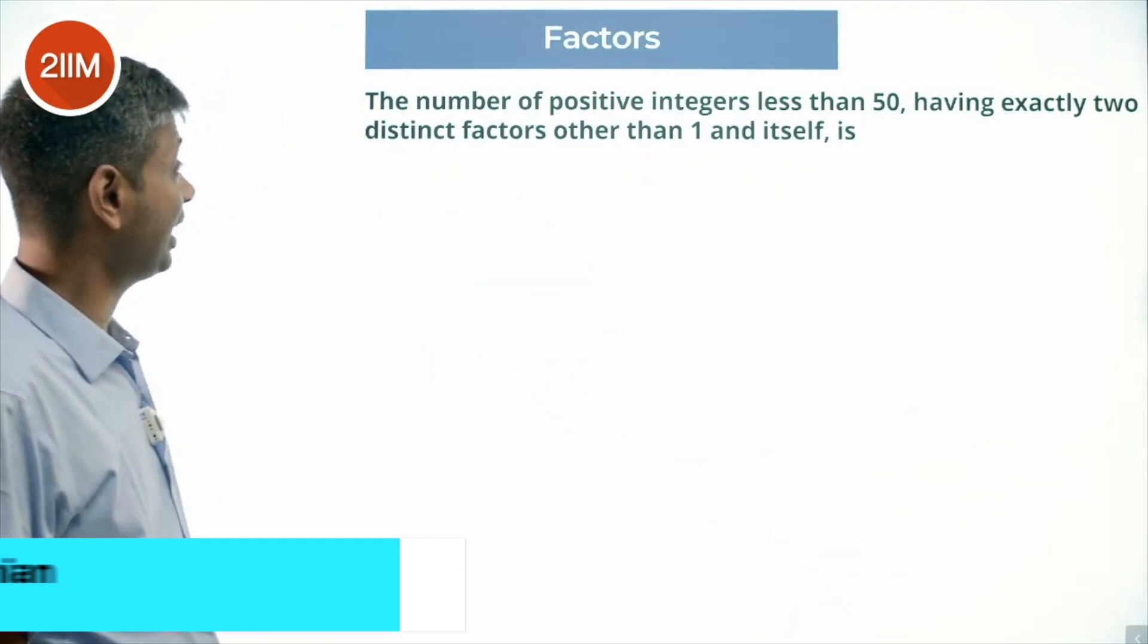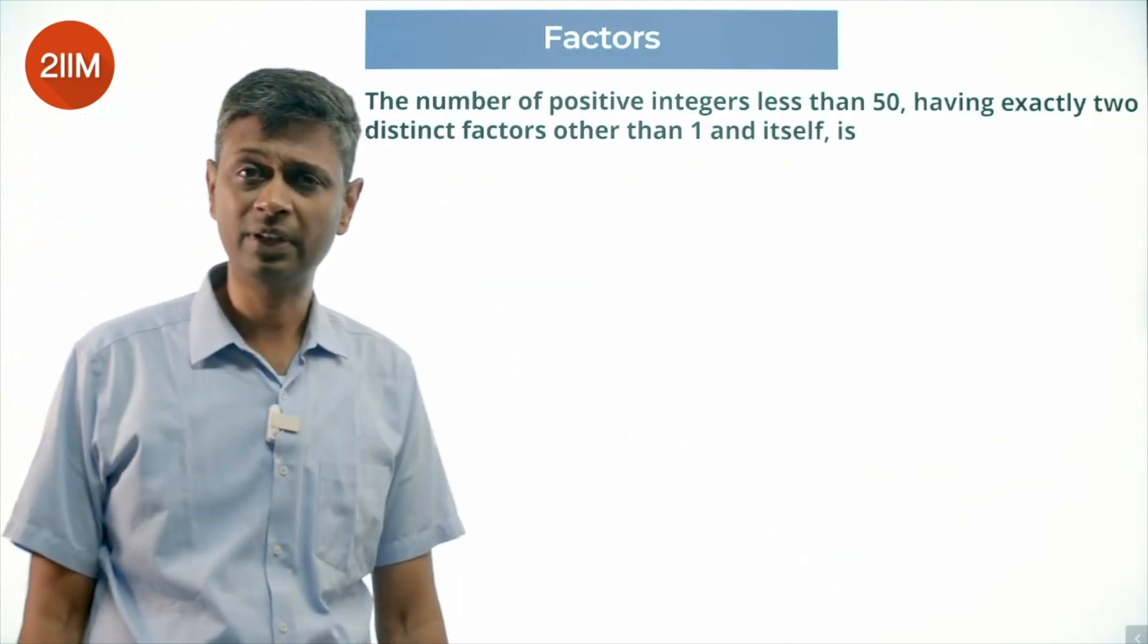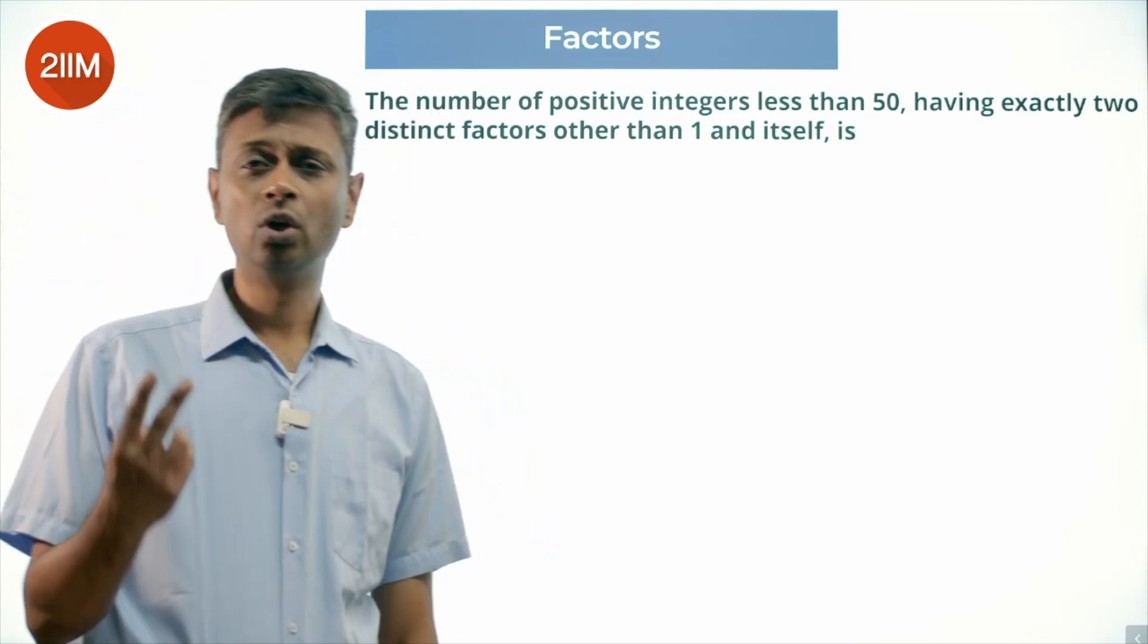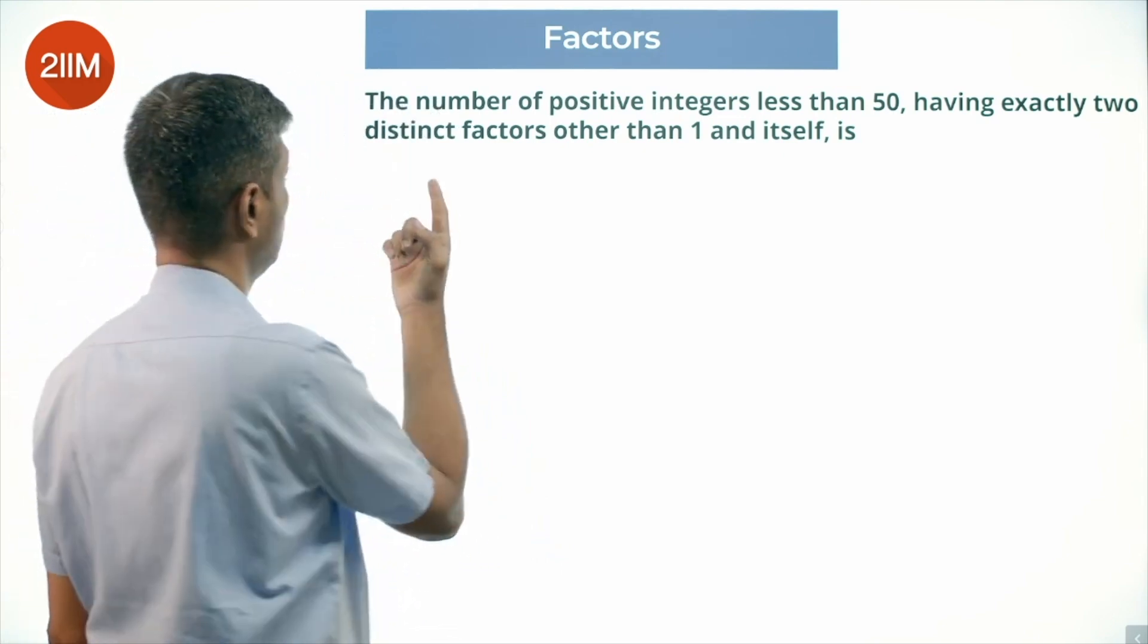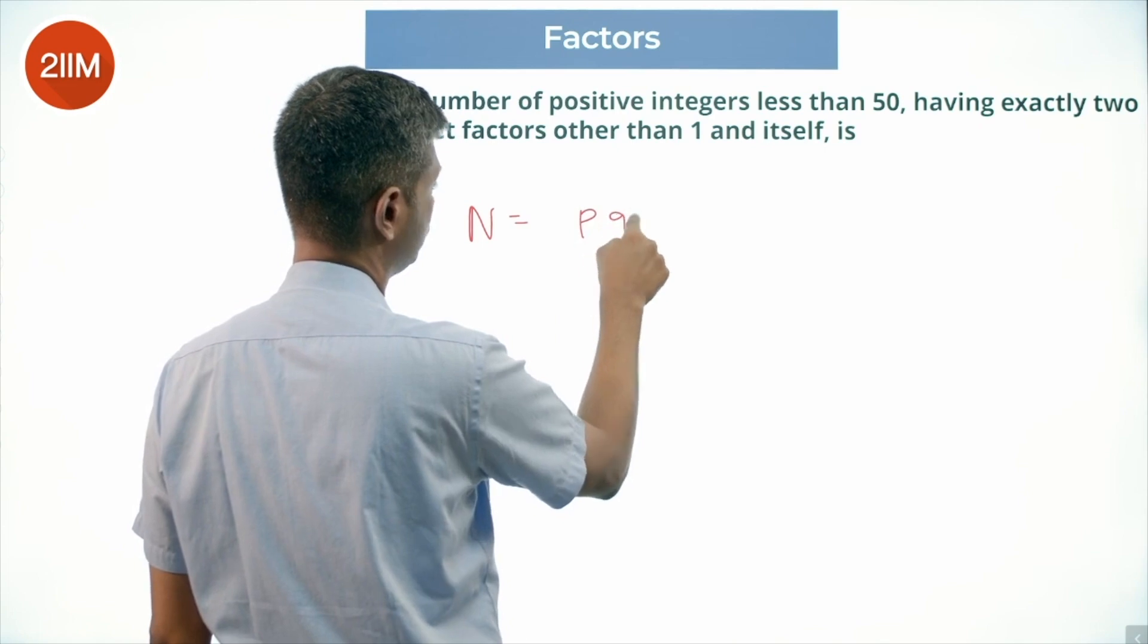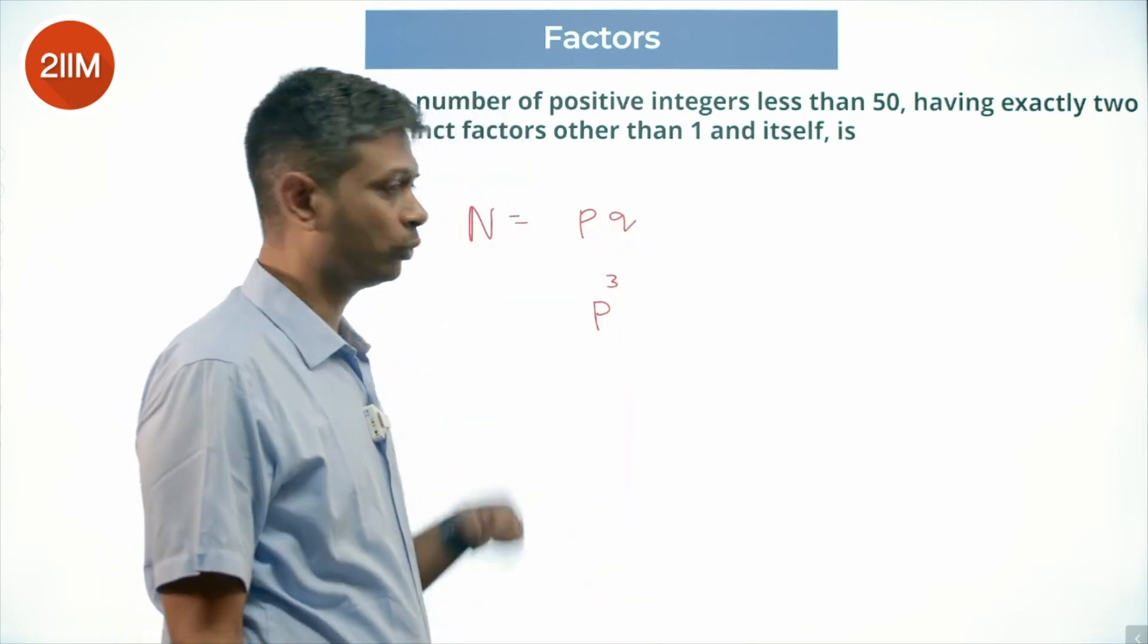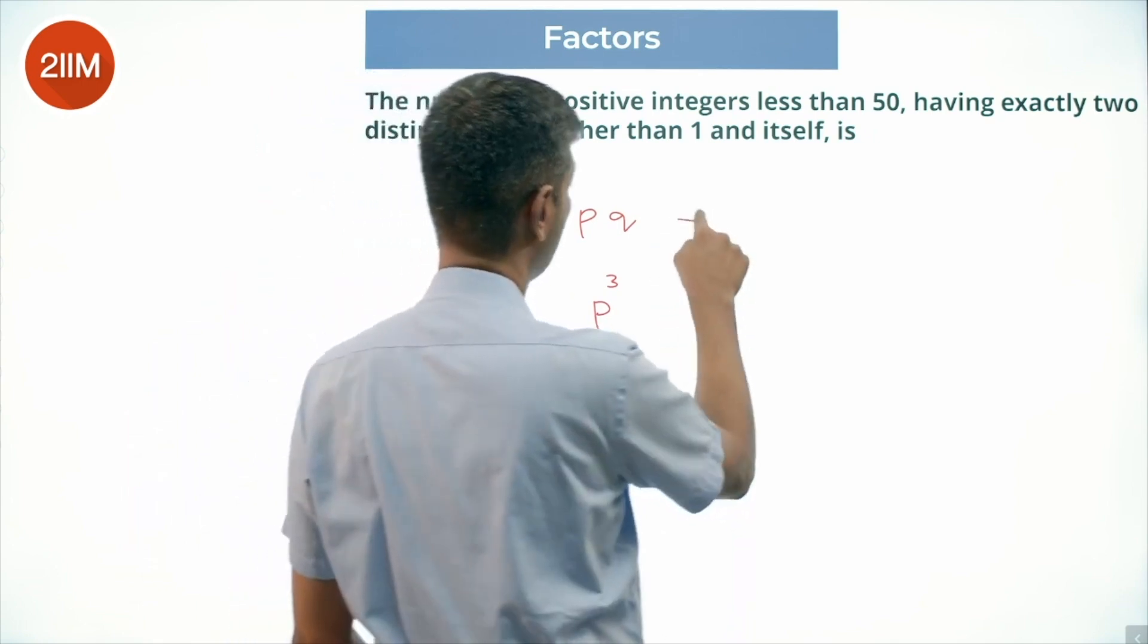The number of positive integers less than 50 having exactly two distinct factors other than one and itself, or four factors totally. The number n should be of the form p×q or should be of the form p³, where p and q are distinct primes.